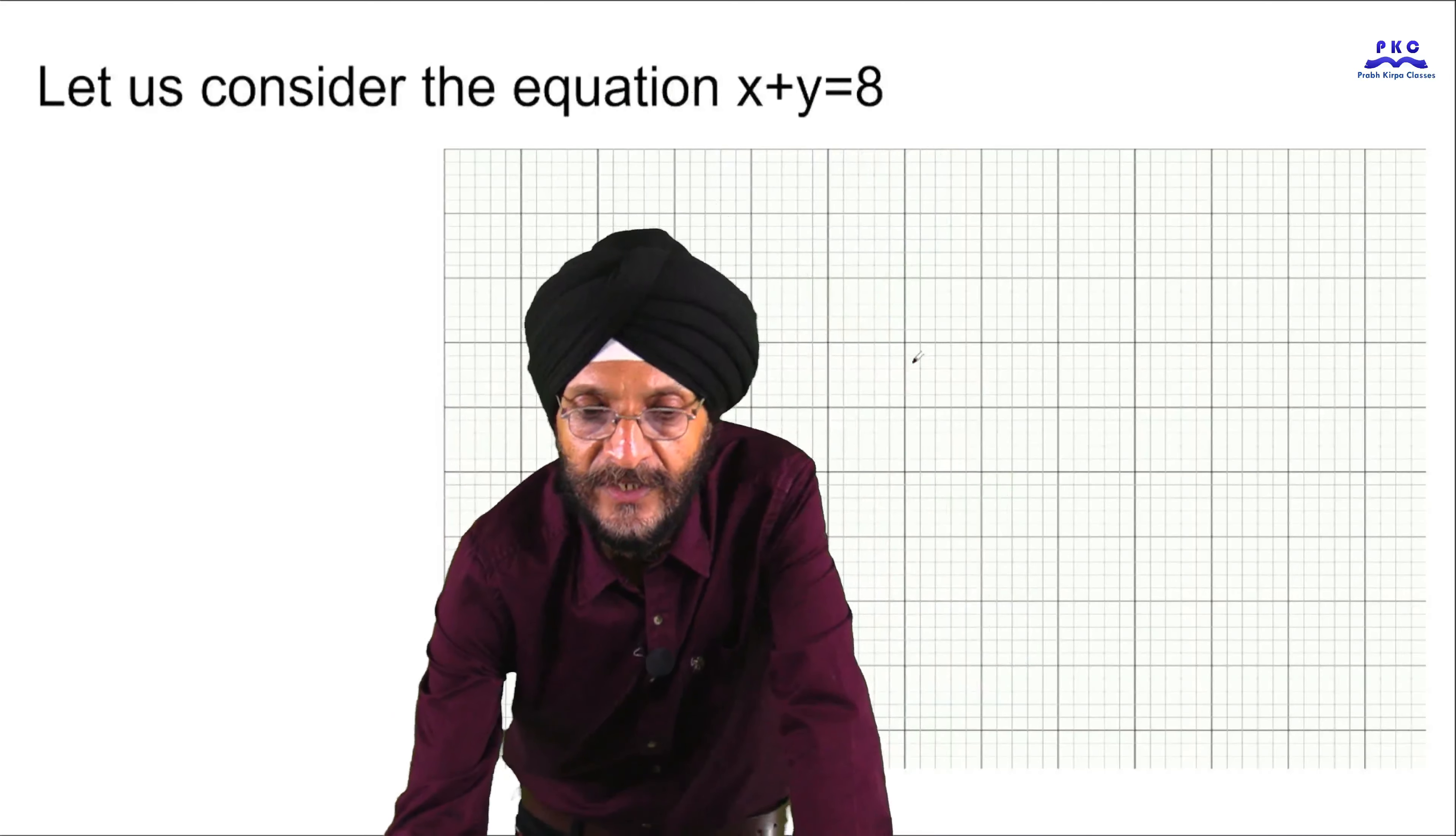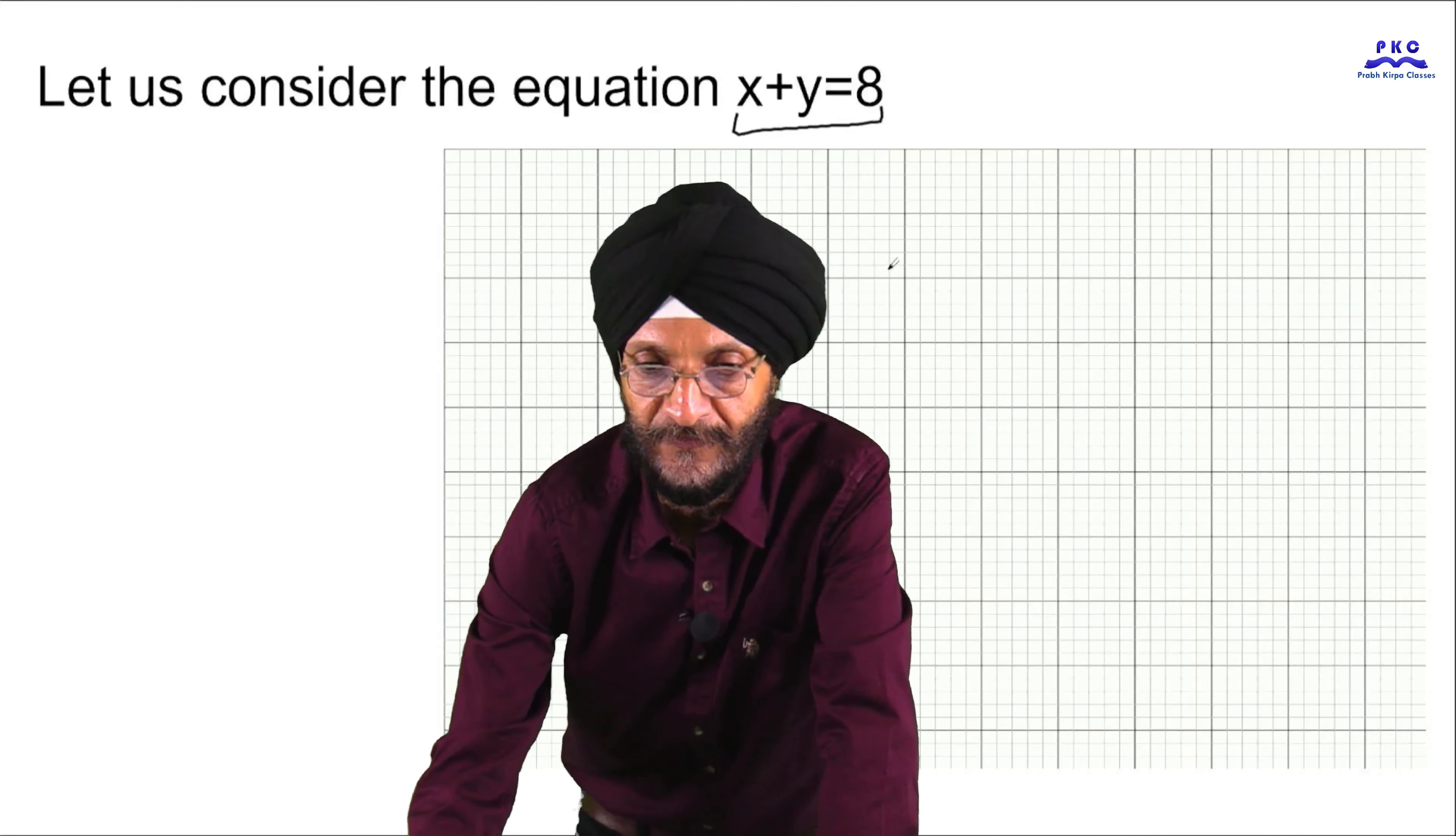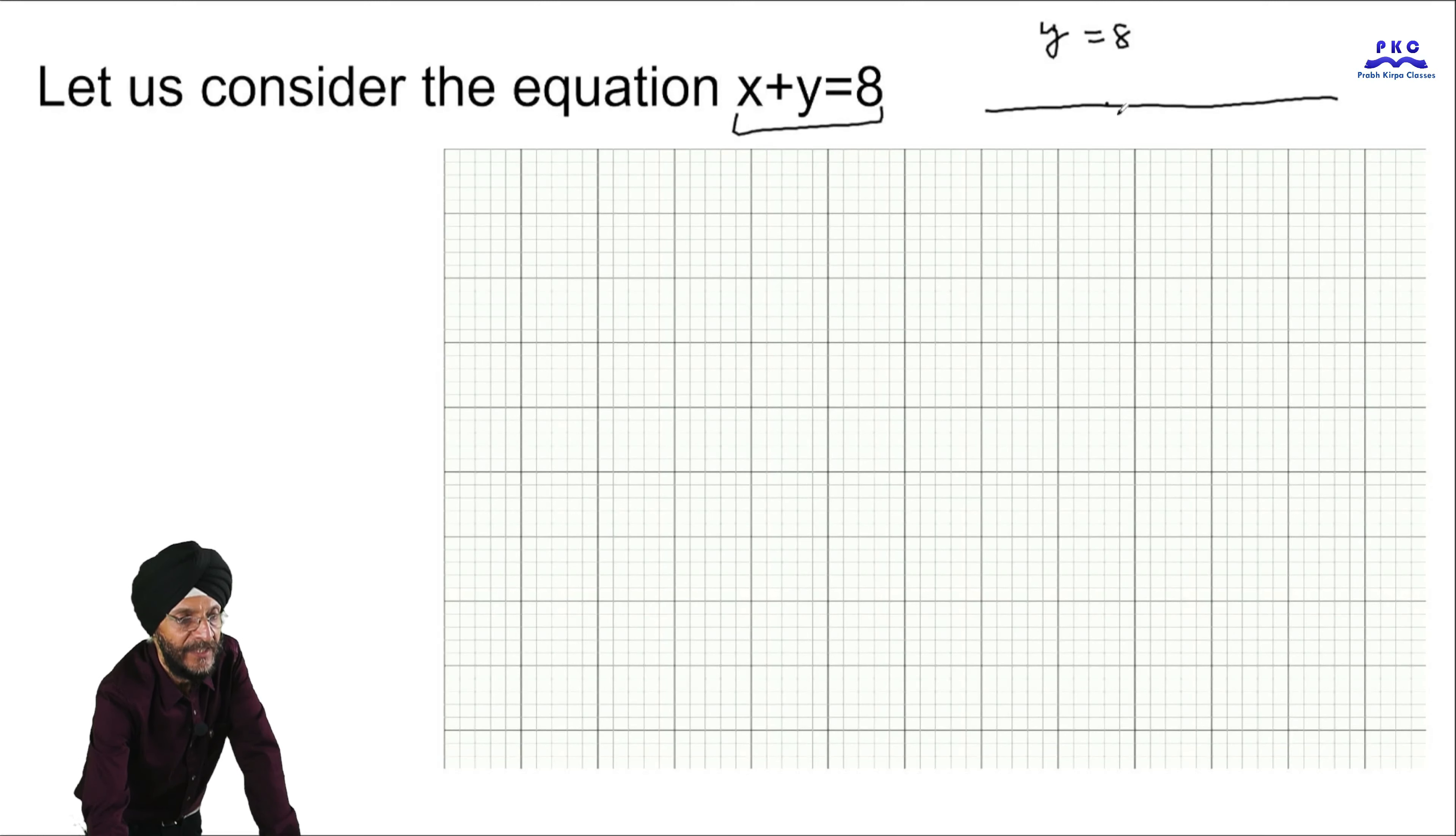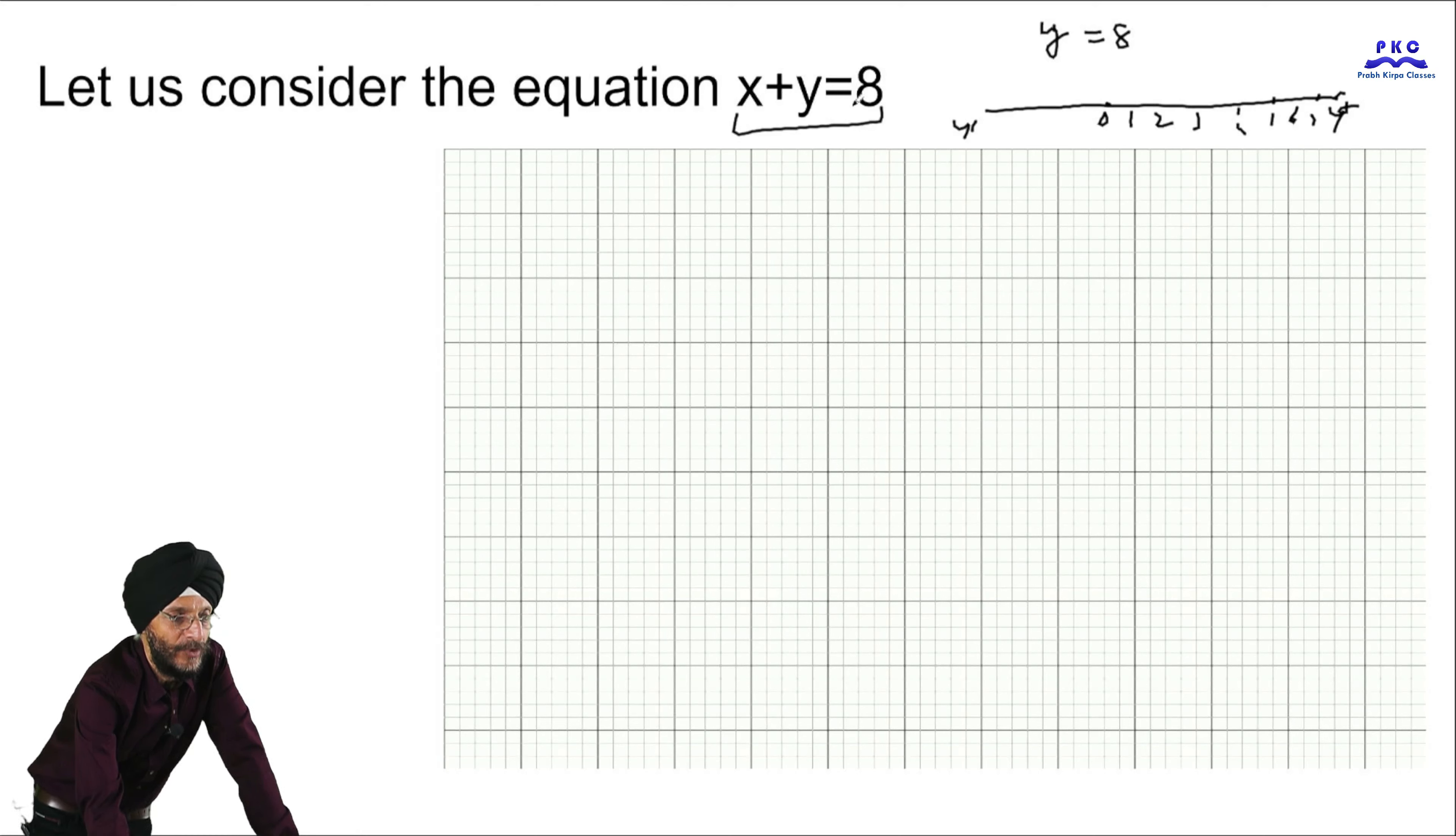We here give an example of a linear equation X plus Y is equal to 8. Here, if this equation is given as Y is equal to 8, it is a linear equation in 1 variable and it can be graphically represented in this form 1, 2, 3, 4, 5, 6, 7, 8. So it is the graphical representation of a linear equation in one variable, but this is the linear equation in two variables, where this is the one variable, this is the another variable.